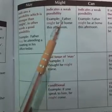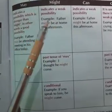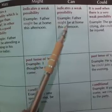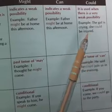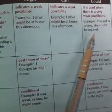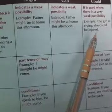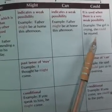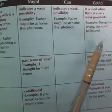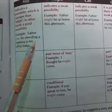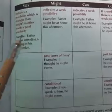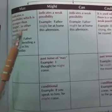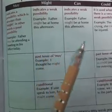'Father might be at home this afternoon' — there is a possibility but it is a weak possibility. 'The girl is crying, she could be injured' — there is a weak possibility, we are not so sure. With may we are eighty percent sure, whereas with might and could the chances are about fifty-fifty. When possibilities are stronger, we use may; when possibilities are weaker, we use might or could.